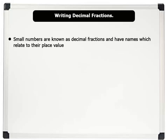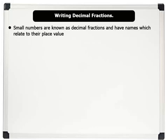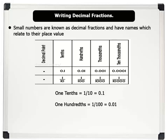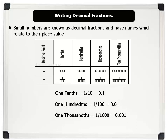Small numbers are known as decimal fractions, and have names which relate to their place value. The table on the board shows some decimal fractions and their positions in the place value chart, bearing their names. For example: one tenth equals one over ten, which equals 0.1. One hundredth equals one over one hundred, which equals 0.01. And one thousandth equals one over one thousand, which equals 0.001.